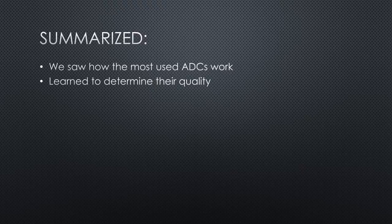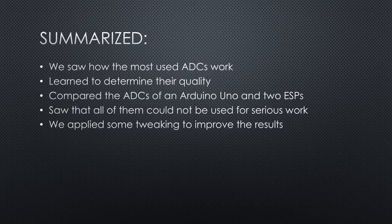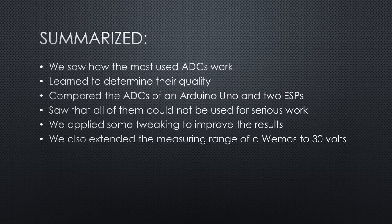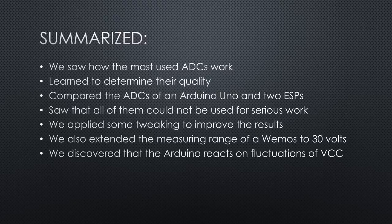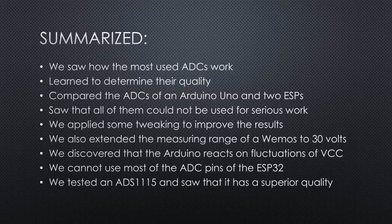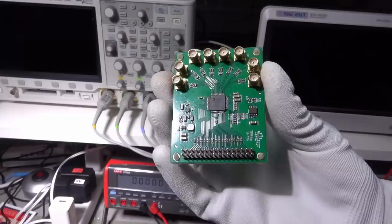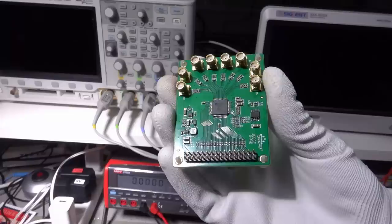Summarized, we saw how the most used ADCs work and learned to determine their quality. Compared the ADCs of an Arduino Uno and two ESPs and saw that all of them could not be used for serious work. Because of their low quality, we could apply some tweaking to improve the results. We also extended the measuring range of a Wemos D1 Mini to 30 volts. We discovered that the Arduino reacts on fluctuations of VCC and how to avoid it. A tiny comment of Igor revealed that we could not use most of the ADC pins of the ESP32, because they are used for Wi-Fi stabilization. We tested an ADS-1115 external ADC board and saw that it has superior quality compared with all the internal ADCs. And it became clear that we have to use external ADCs for serious work.